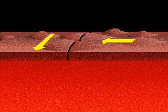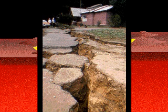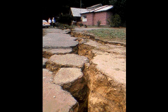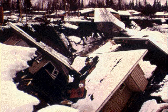The third type of plate interaction occurs where plates meet at oblique angles to each other. Pressure and friction between the surfaces prevent slippage. When the tension becomes too great, the plates shift, sliding along a fault line. Occasionally, violent tremors result and cause the widespread destruction of an earthquake. The Alaskan earthquake of 1964 was caused by such a shift in the fault running along the western edge of North America.